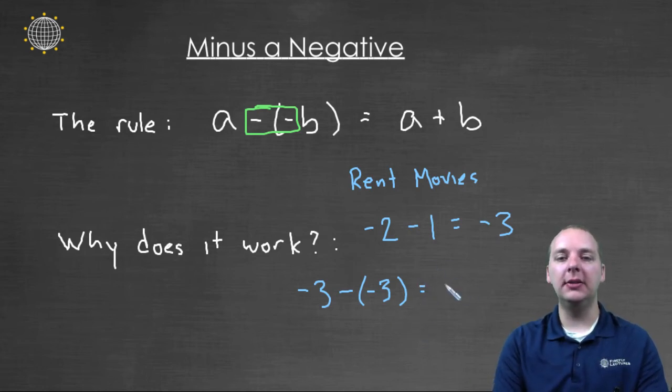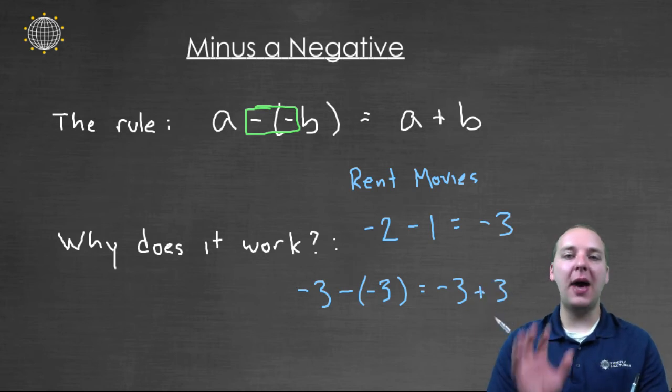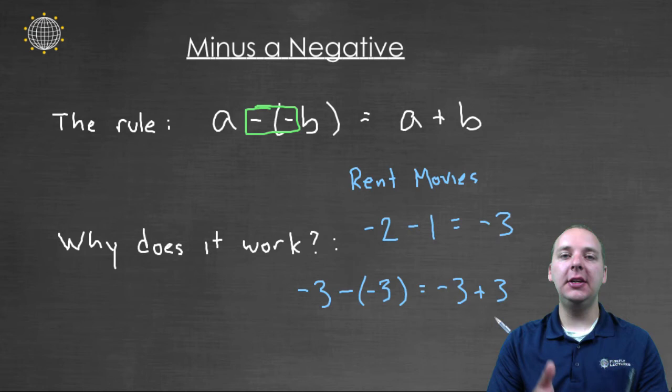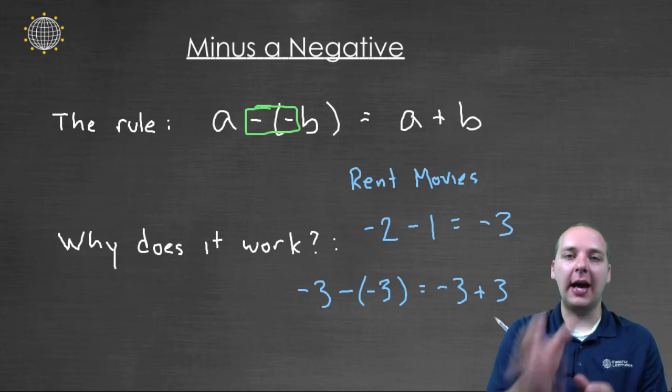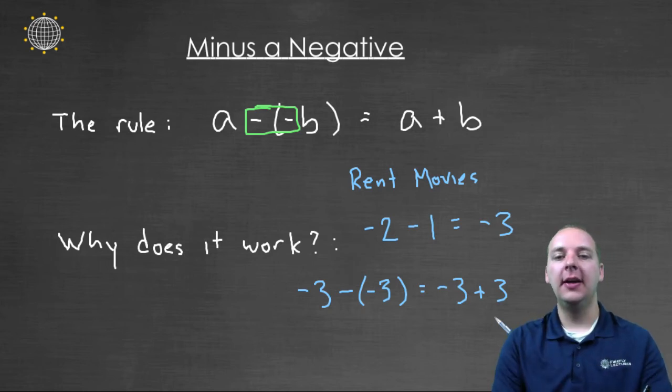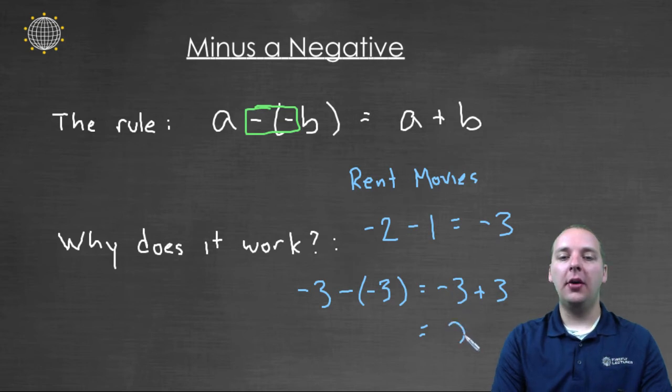But in practical terms, we know exactly what this means. This means we were indebted to the company for three movies, and then when the company got those three movies back, they added those three movies back on their shelves. So you see, removing my debt is the same as adding those movies back to their shelves. And as we would have guessed, our total balance at the end of the day would be zero.